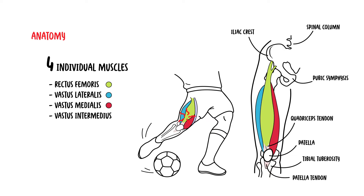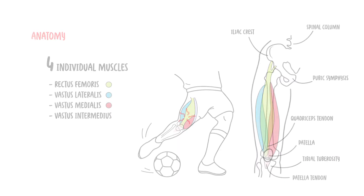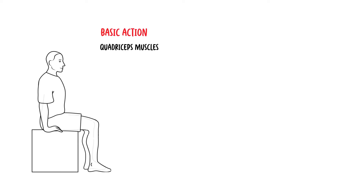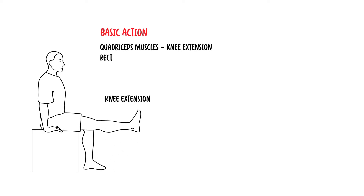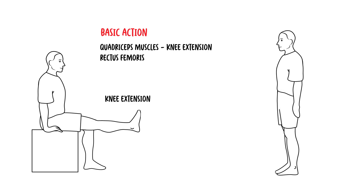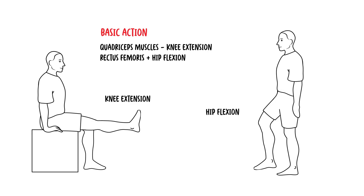The patella itself is a sesamoid bone which sits in front of the knee joint. The combined action of the quadriceps muscle is knee extension. The rectus femoris, which is one of the four quadriceps muscles, also assists with hip flexion.